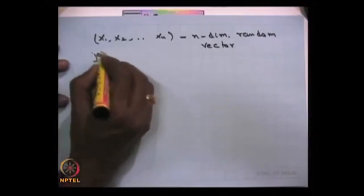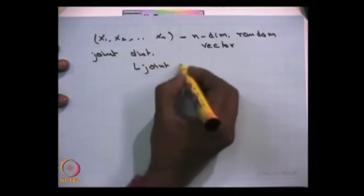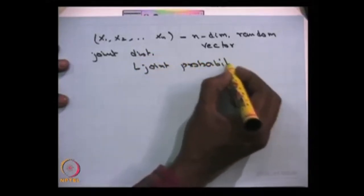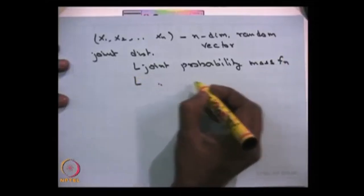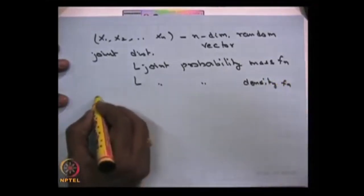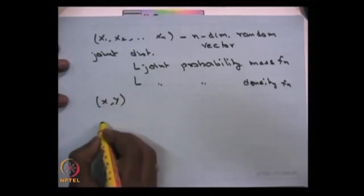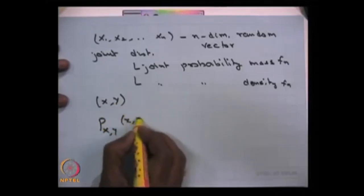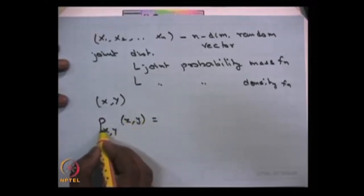The joint distribution can be discussed in two ways: either as a joint probability mass function or as a joint probability density function. For example, take a two-dimensional random variable (x, y). If both x and y are discrete random variables, then you can define the joint probability mass function as p(x, y), where small x and small y are the variable values.